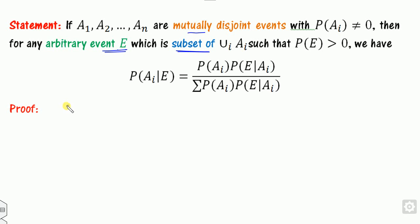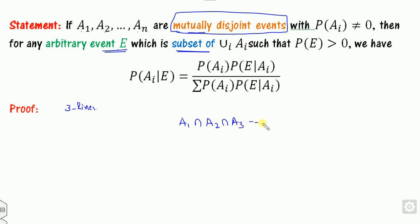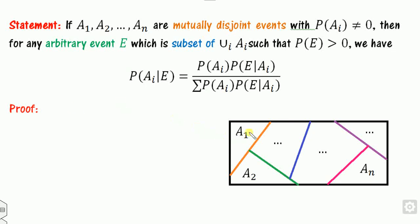The proof is very easy — just three lines. Given: A1, A2, ..., An are mutually disjoint, meaning A1 ∩ A2, A1 ∩ A3, and all such intersections are empty, and their union is the complete sample space S. Let me draw the figure: this is A1, this is A2, this is A3, this is A4, and so on up to An, all within sample space S — these are my disjoint sets.